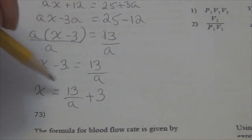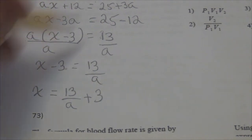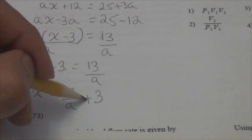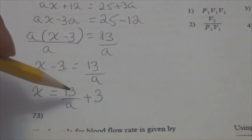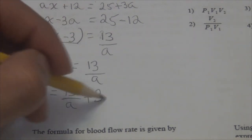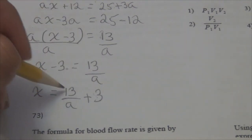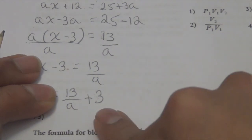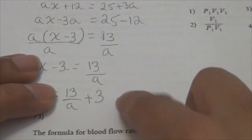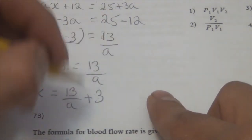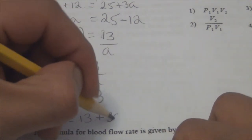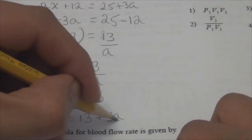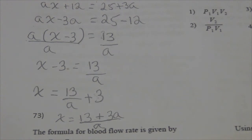If I wanted to represent this as a single fraction, I'd find a common denominator of A. Multiply 3 by A over A to get 3A over A. So X equals (13 plus 3A) over A. Both forms are equivalent — that's the answer.